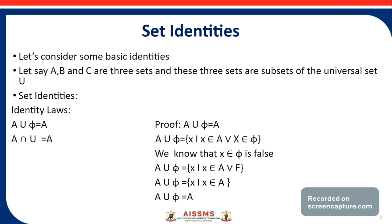So A union φ equals the set of all X such that X belongs to A or F. We know that A or F is nothing but A, so we can replace A or F by A. Therefore A union φ equals the set of all X such that X belongs to A, which is nothing but A. Hence proved: A union φ is equal to A.